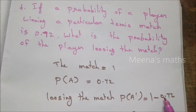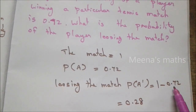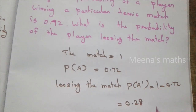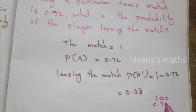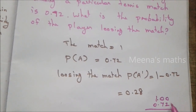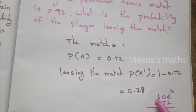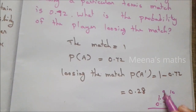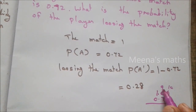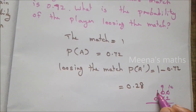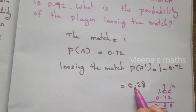Probability of losing the match equals 1 minus 0.72, which equals 0.28. Therefore, the probability of the player losing the match is 0.28.